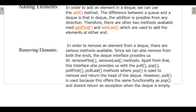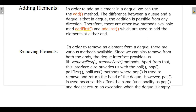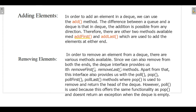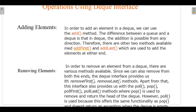For removal, the Deque interface provides two methods: removeFirst and removeLast. Apart from those, the interface also provides methods such as poll, pop, pollFirst, and pollLast. The pop method is used to remove and return the head of the Deque. The poll method offers the same functionality as pop but returns null instead of throwing an exception when the Deque is empty.